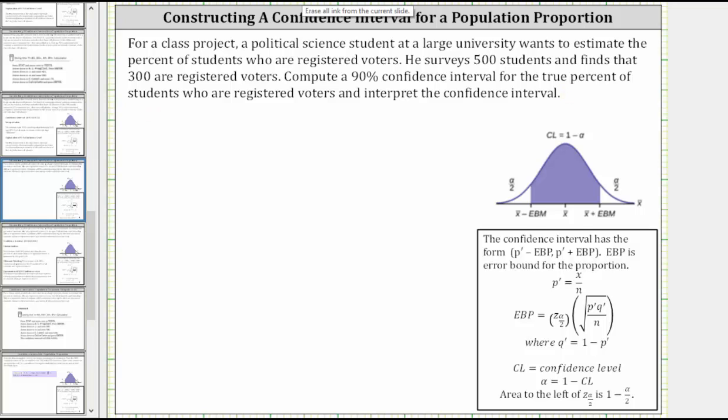Let's begin by determining p-prime, the sample proportion. Because 300 of the 500 students are registered voters, p-prime is equal to 300 divided by 500, which is equal to 0.6. Q-prime is equal to one minus p-prime, and therefore q-prime is equal to one minus 0.6, which is 0.4.